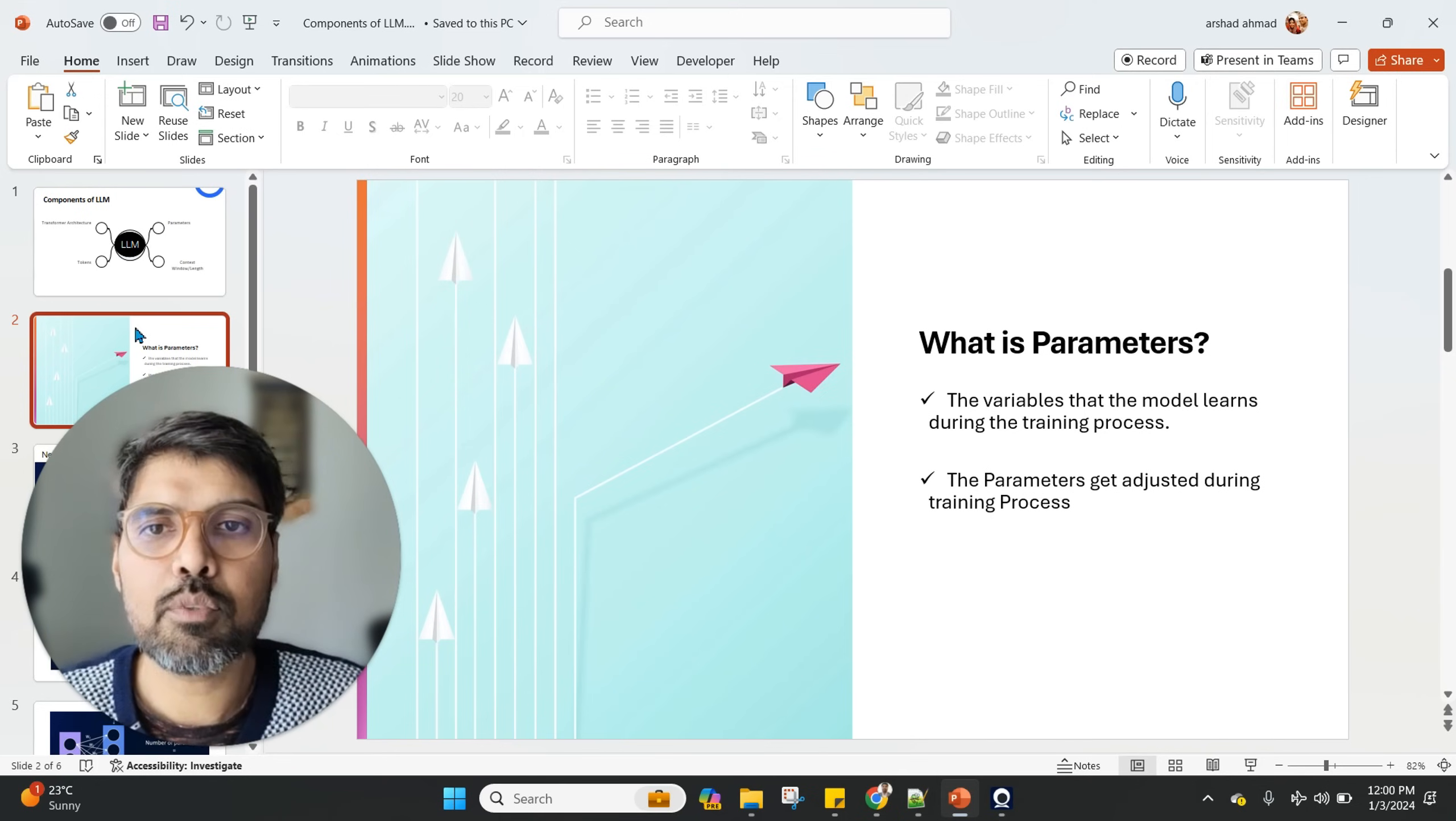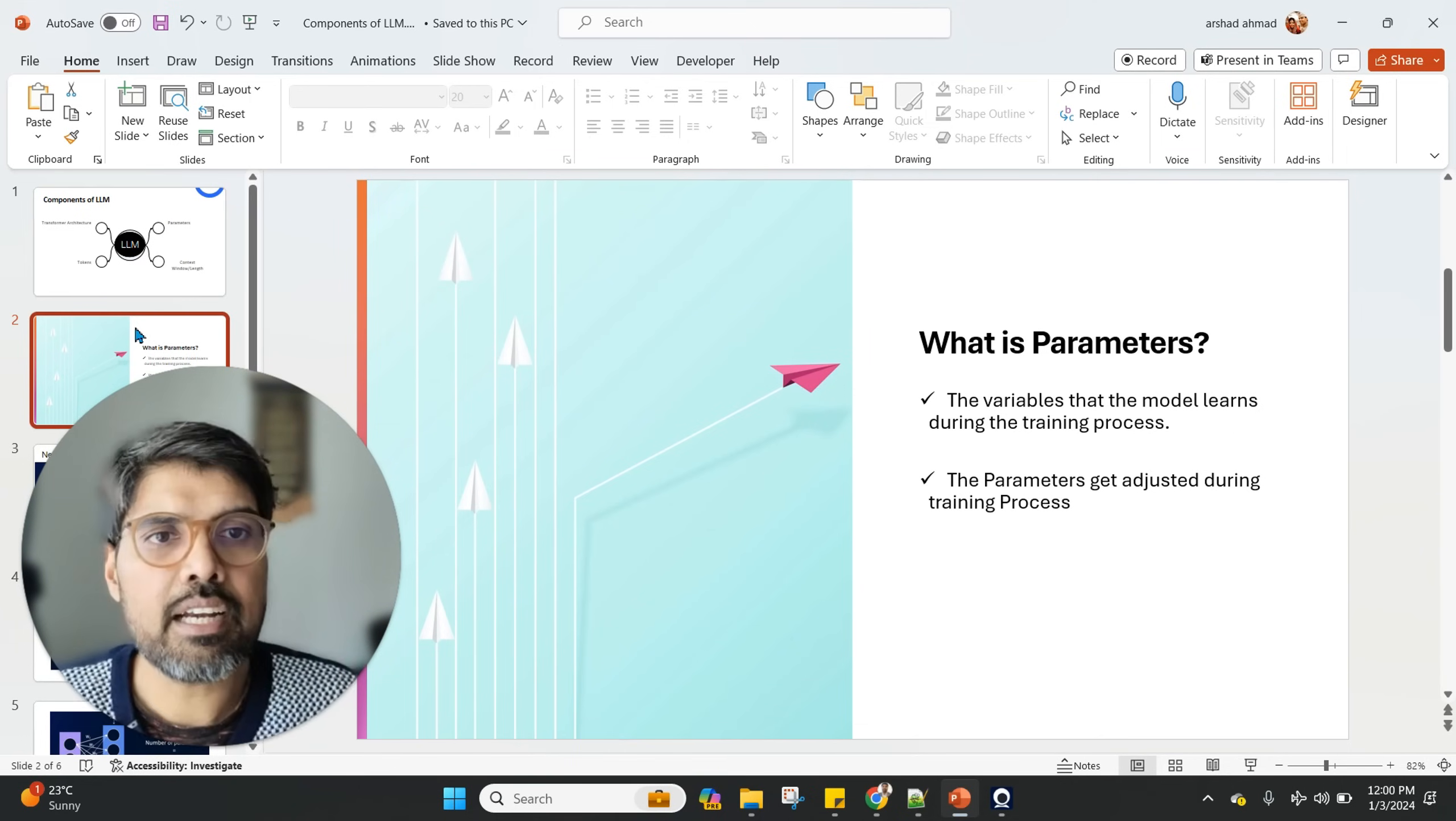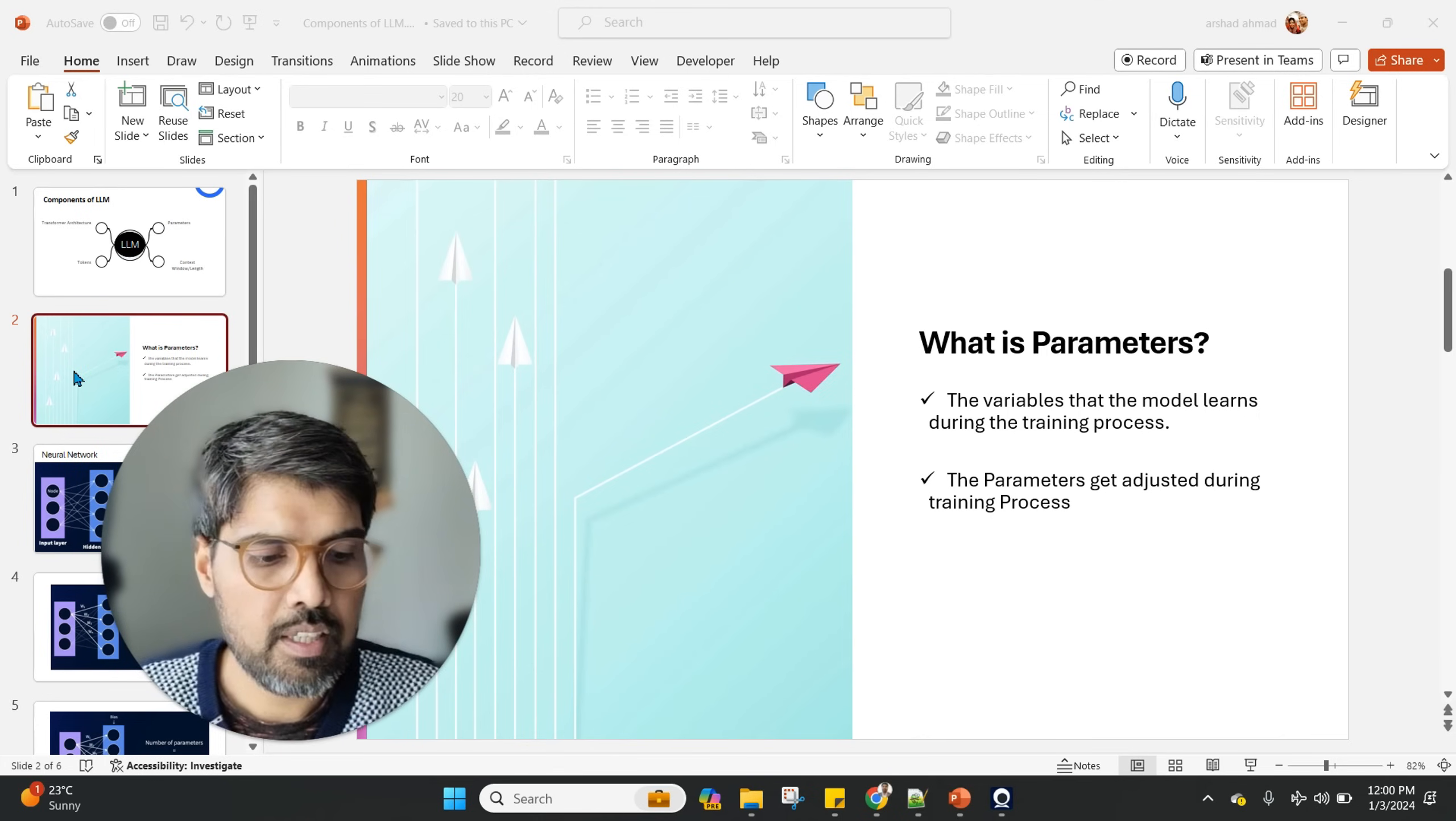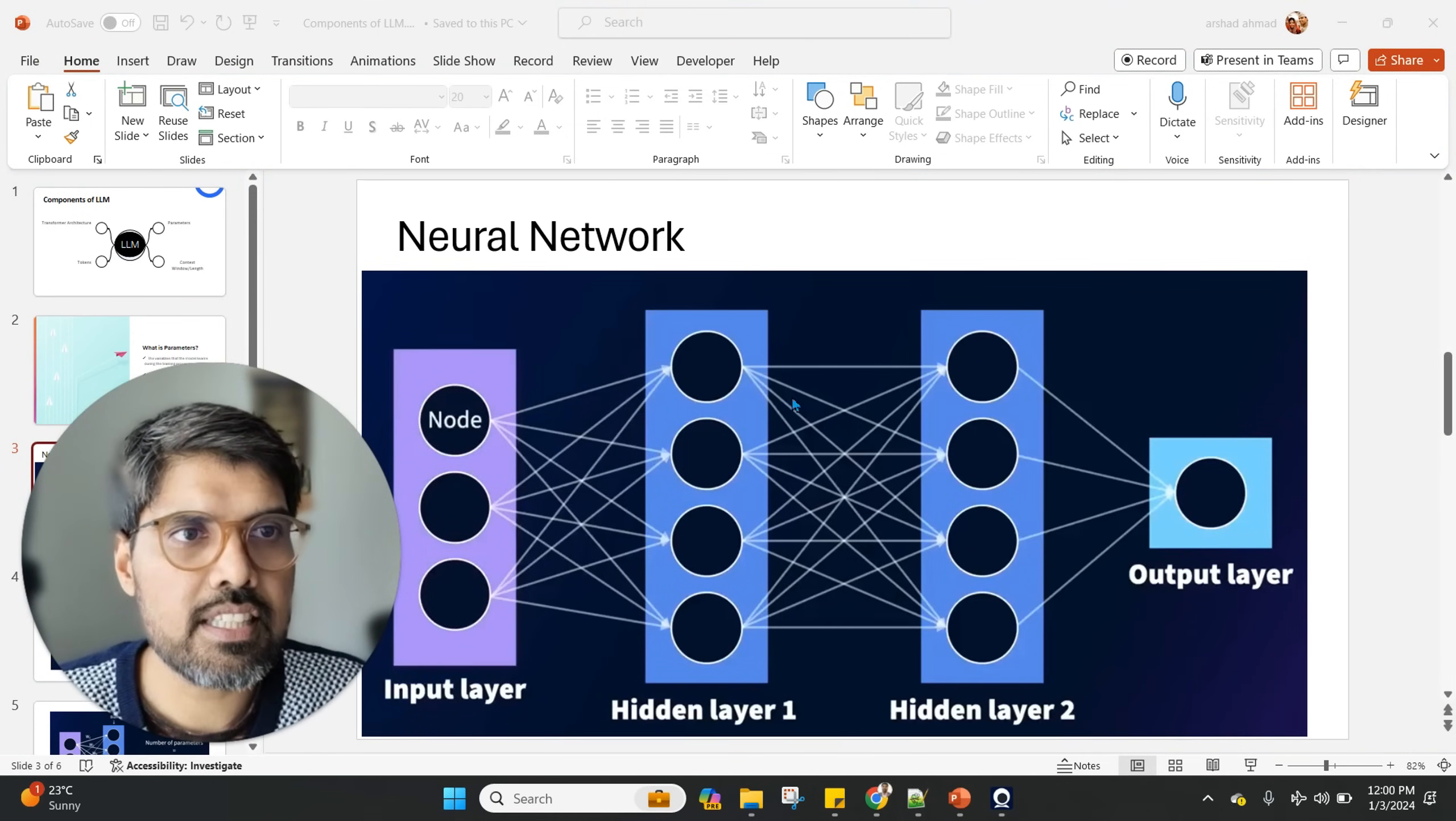Why does this happen? Because for a given input during the training process, you want to try and minimize the difference between the predicted and the actual output. Let me give you an example of a neural network and how the parameter comes into the picture.